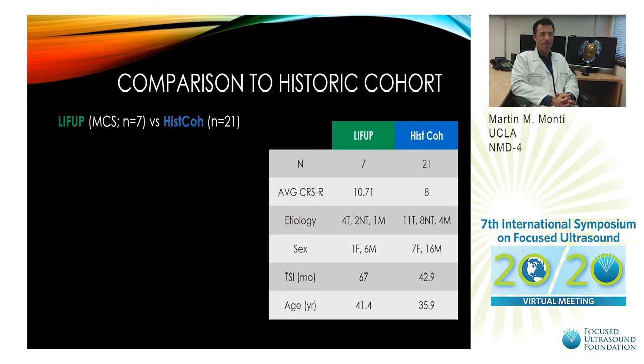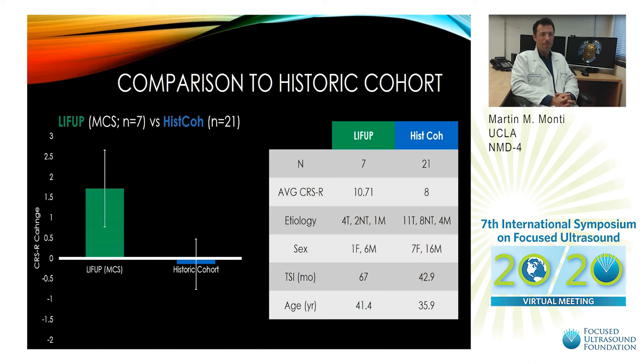In terms of chronic patients, we did have a comparison historical cohort who also received multiple coma recovery scales over the span of a week but did not have a treatment. In these patients, we saw no change over the span of a week, whereas our patients had over 1.6 points change in the coma recovery scale, meaning that our patients show an average amelioration in their condition, which is very exciting.